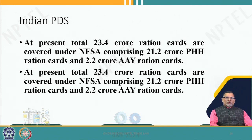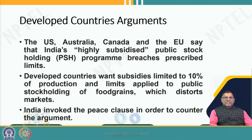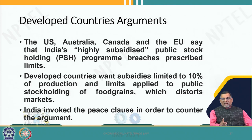Around 50 crore people out of 140 crores are benefited through the public distribution system in India. At the same time, developed countries argue that these stock holdings or stockpiling are highly subsidized. These countries arguing for inclusion in AMS are the US, Australia, Canada and EU — the highly developed countries who are not even in the hunger index.